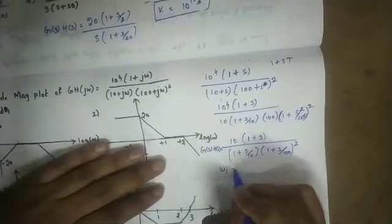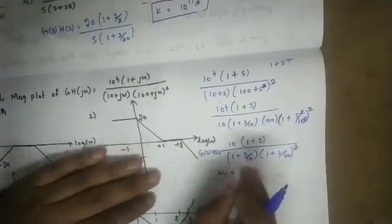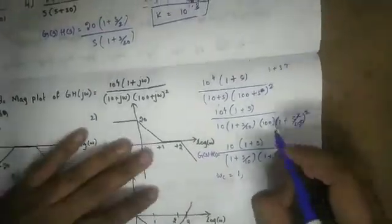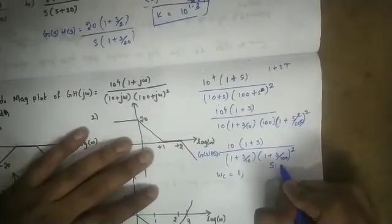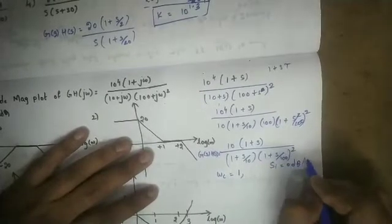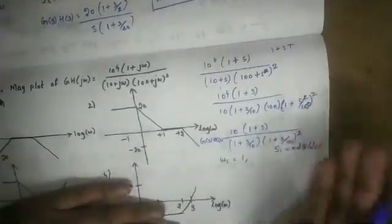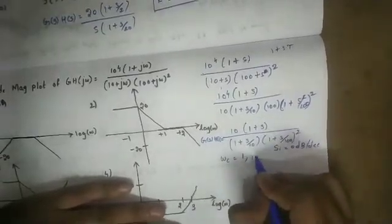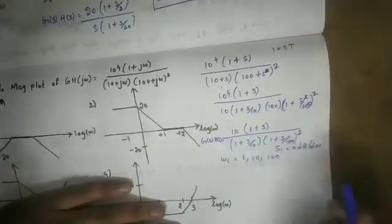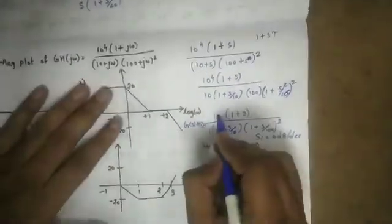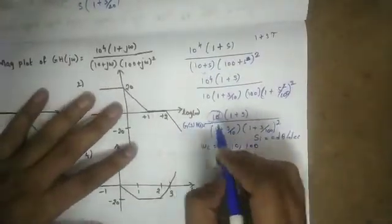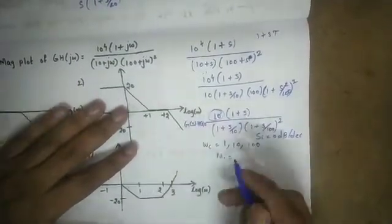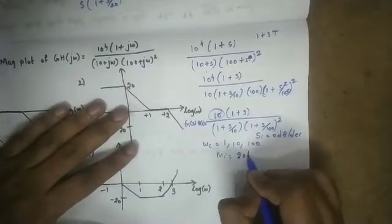There are no poles or zeros at the origin, so the initial slope is 0 dB per decade. The corner frequencies are: 1 plus s by 1 gives corner frequency 1; s by 10 gives corner frequency 10; and 100 gives corner frequency 100. The system gain K is 10. With no poles or zeros at the origin, the initial magnitude is simply 20 log K.